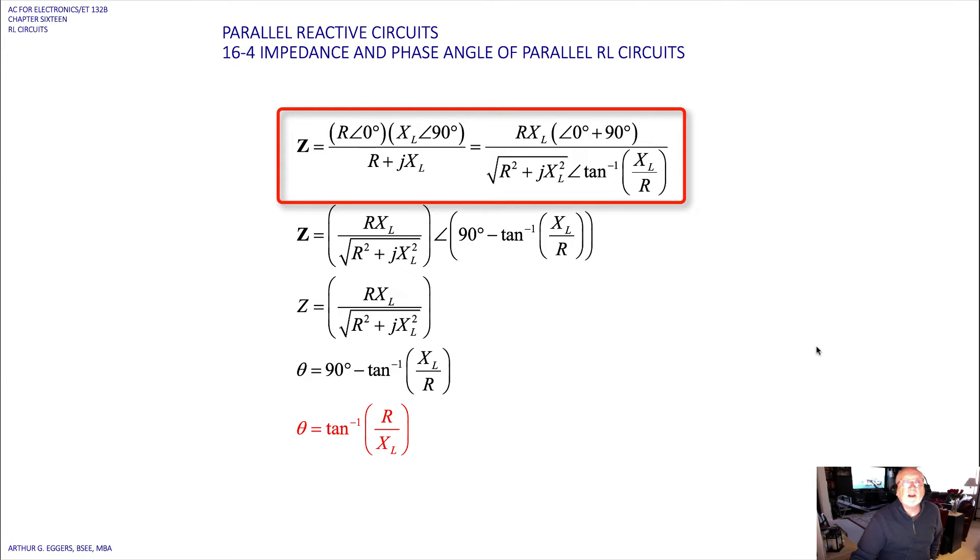So if we take a look at the math for this configuration, what we've got here is our impedance ends up being, what does that look like to you? We've got a product over the sum, so we've got a product over the sum. Notice we've got polar representation in the numerator, we've got rectangular representation in the denominator.